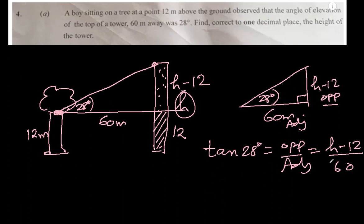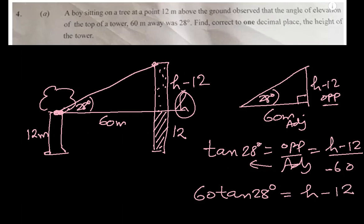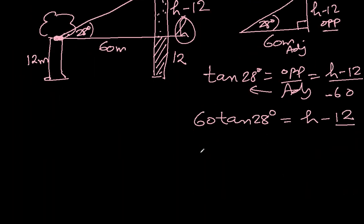That gives us tan 28 degrees equals h minus 12 over 60. Cross multiplying: 60 tan 28 degrees equals h minus 12. Since 60 moved to the other side, h minus 12 has no denominator. Now bring the 12 to the left side and add to 60 tan 28, and we get our answer straight away.